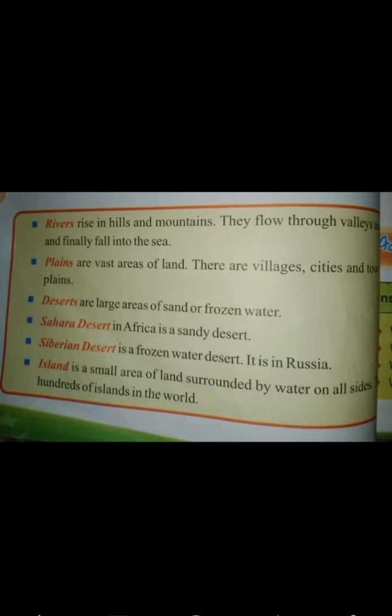Deserts are large areas of sand or frozen water. The Sahara Desert in Africa is a sandy desert. The Siberian Desert is a frozen water desert located in Russia. An island is a small area of land surrounded by water on all sides. There are hundreds — in fact, thousands — of islands present on our earth.